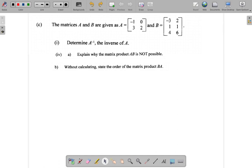Let me just rewrite these to make it clearer. B is -3, 2, 1, 1, 4, 6 here. And A is -1, 0, 3, 2. Right?